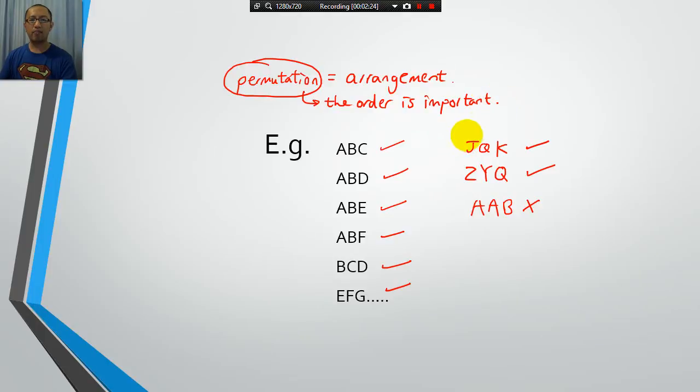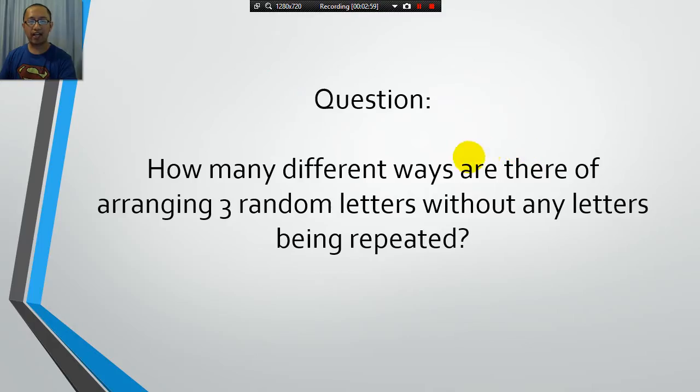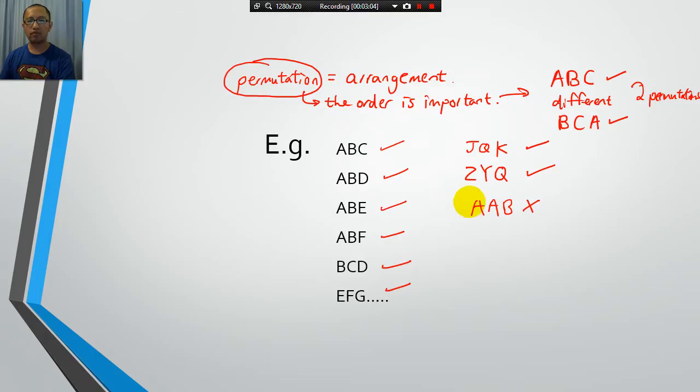Now what that means is, for example, ABC is different to BCA, even though they contain the same letters. But because we ordered them differently, they count as two arrangements, two permutations, or in other words, two ways of arranging. So how many ways are there of arranging three random letters? How many permutations are there?